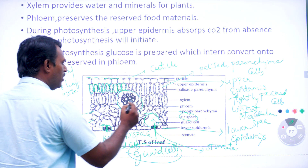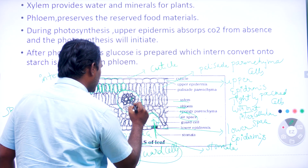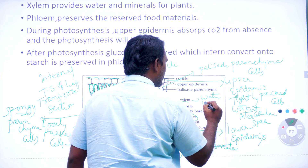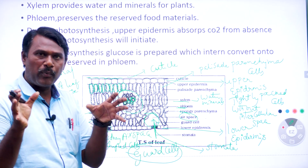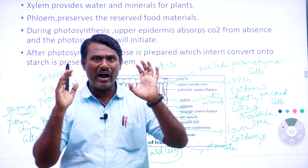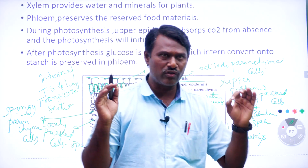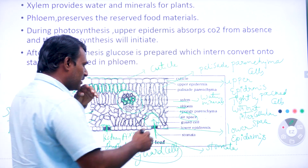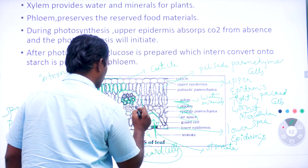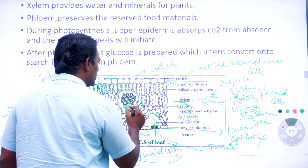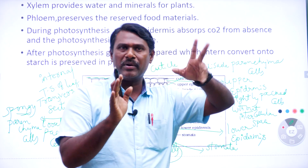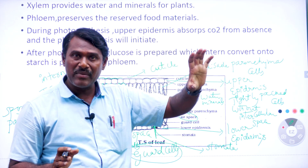In the middle of the TS of leaf we have two tissues: xylem and phloem. Xylem's main function is to supply water and minerals for the plants. Water is also one of the essential factors for photosynthesis, and that water is provided by xylem. Below the xylem we have phloem tissue, which is one of the complex tissues of the plants. Xylem connects water and minerals; phloem is useful to preserve the food material.